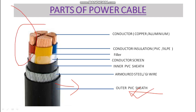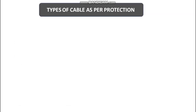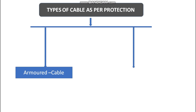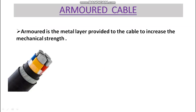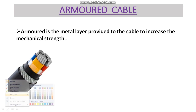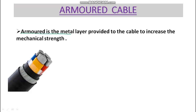Those are the parts of the power cable. Now, as per protection, there are two types of cable: armored cable and unarmored cable. Armored cable is defined as a metal layer provided to the cable to increase its mechanical strength.